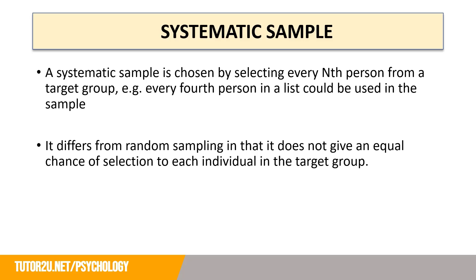Moving on from random sampling, let's take a look at systematic sampling. A systematic method is chosen for selecting from a target group. For example, in a systematic sample every fourth person in a list could be used in the sample. If you were studying psychology students you might take a class register and go down that list choosing every fourth or fifth person. It differs from random sampling in that it does not give an equal chance of selection to each individual in the target group.